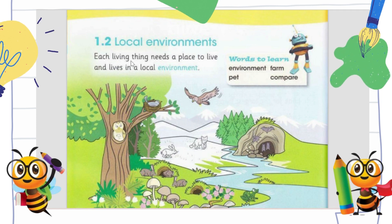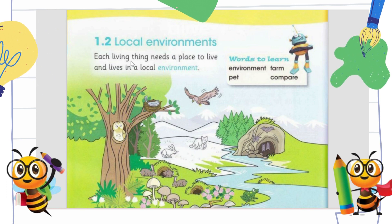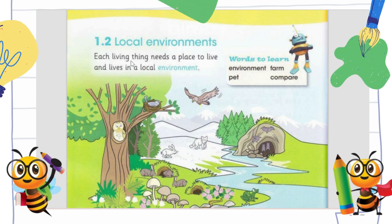Wherever you are living, for example your home, that is your local environment. If you feel cold you turn on the heater, if you feel hot you turn on the air conditioning. We need oxygen to breathe — oxygen comes from trees. If there are no trees where you live, you will suffocate. So for human beings, our local environment needs trees, sunshine, and lots of other things.